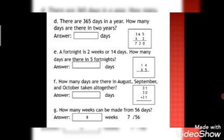Now look at the part G: how many weeks can be made from 56 days? 56 days in a year, how many weeks can be made from 56? Now what do we do? We divide from 56, we divide from 7, then answer will be 8 weeks. Seven eights are 56.